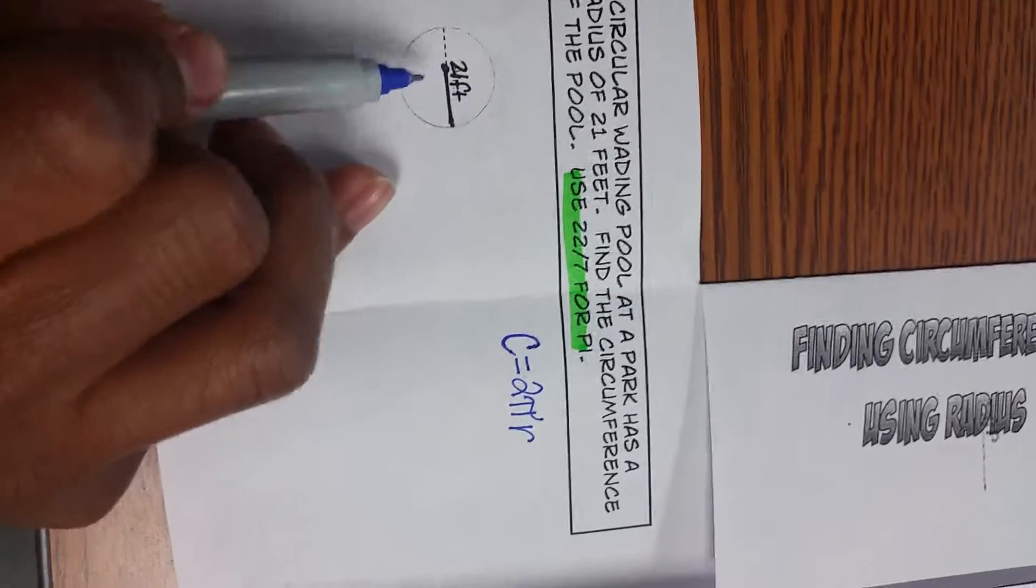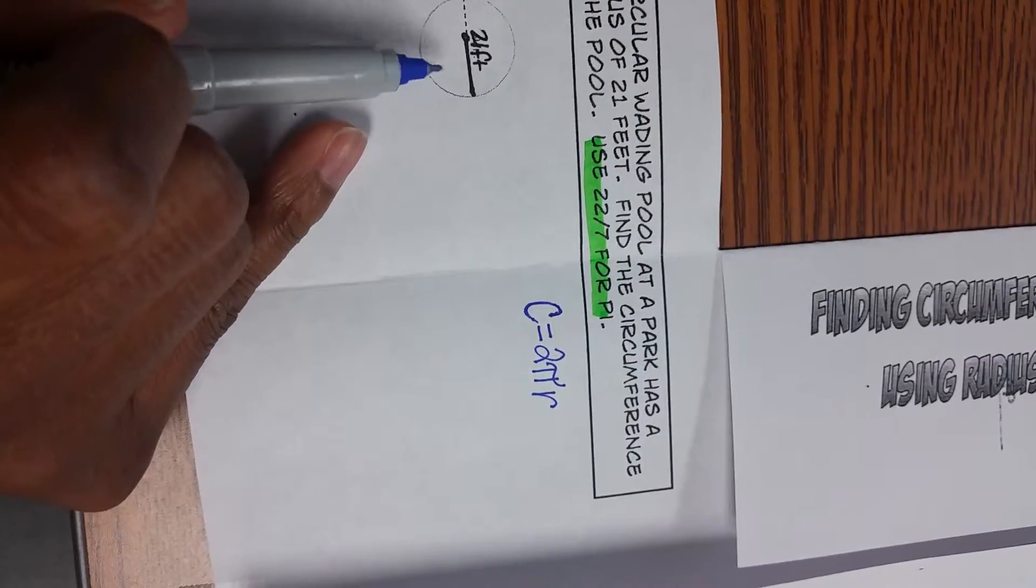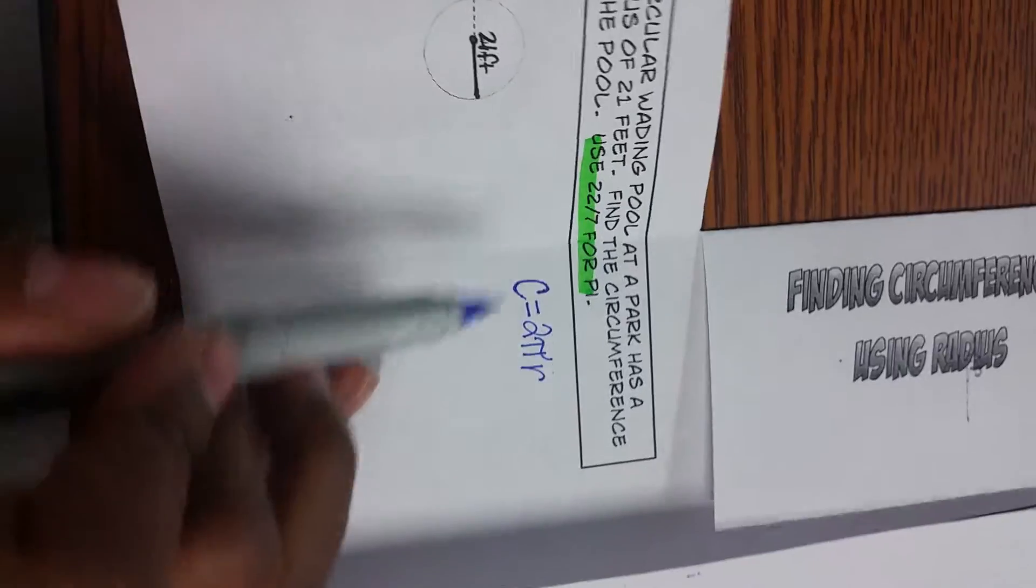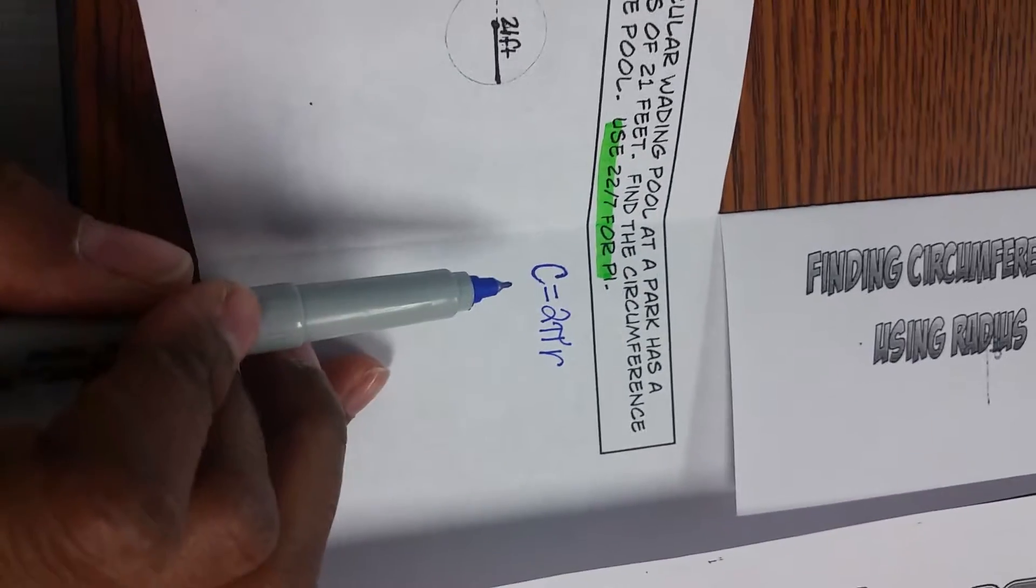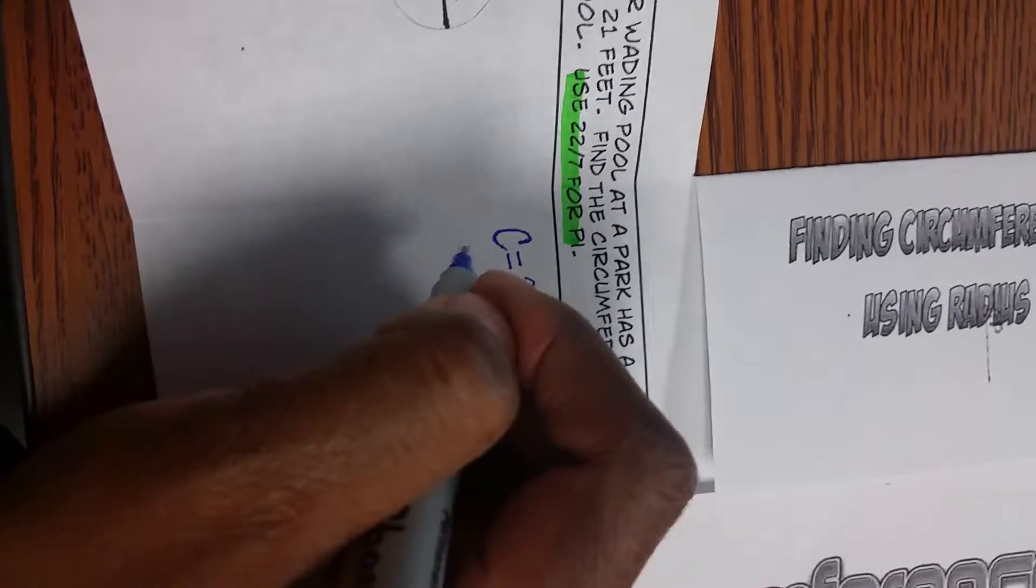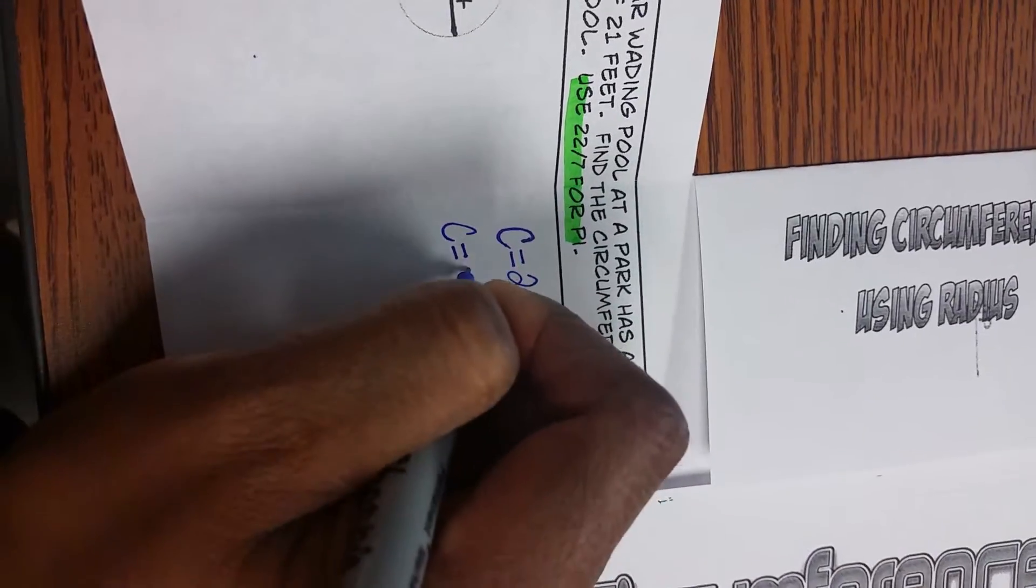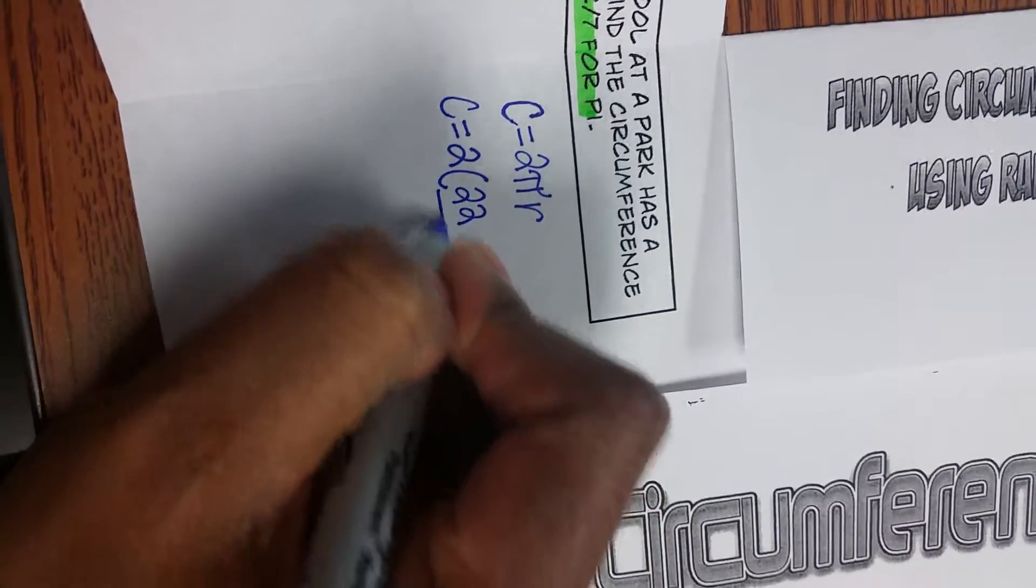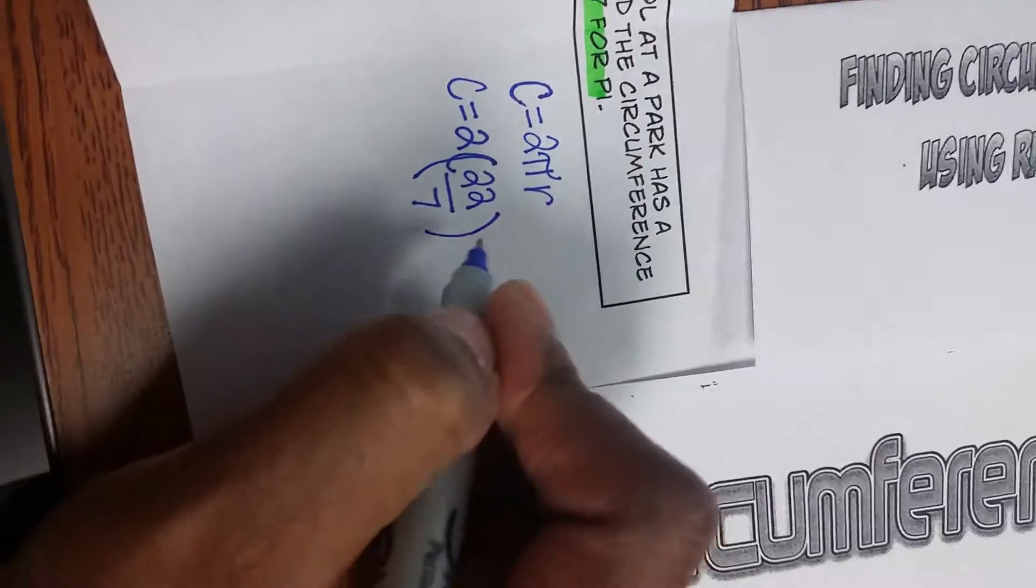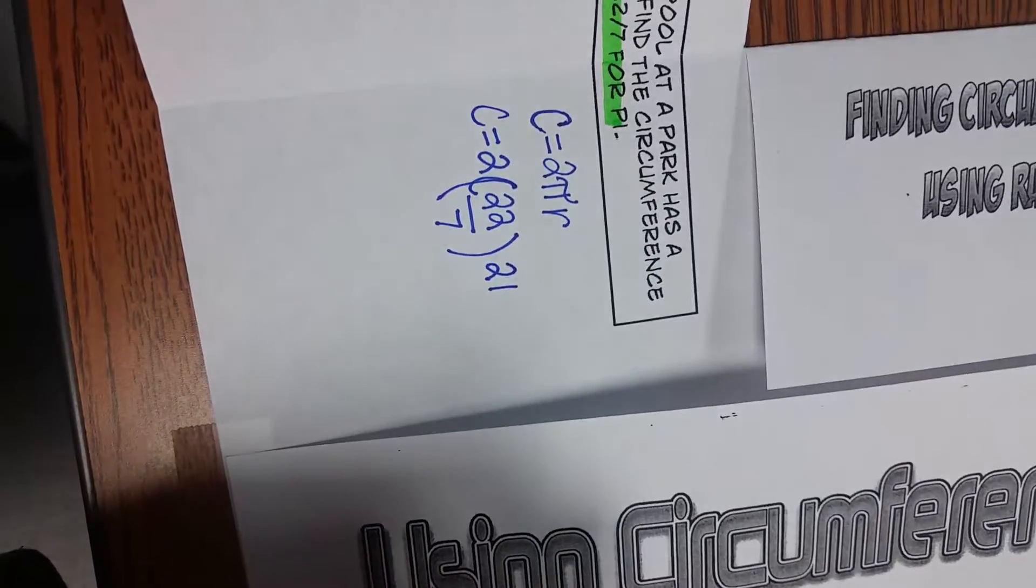So here I fix my picture. I actually drew the diameter, 21 feet. So we're going to just plug this in to our formula. And remember we're going to use 22 over 7 for pi. So c equals 2 times 22 over 7 times the radius, which would be 21.